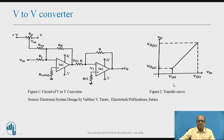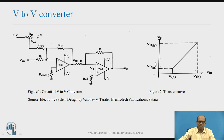This is the transfer curve showing output versus input. When the input changes from V-a to V-b, there is a corresponding change in output from V-oa to V-ob, as shown in the figure.